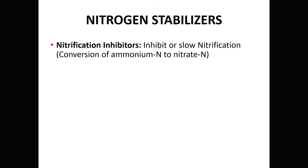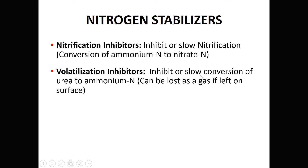When we talk about nitrogen stabilizers — also called nitrogen enhancements — there are two categories. The first is nitrification inhibitors. These products inhibit or slow the conversion of ammonium nitrogen to nitrate nitrogen. We want to slow that process because ammonium nitrogen is stable: microbes can't easily act on it and it holds to the soil. Once converted to nitrate, microbes can strip the oxygen and convert it to a gas — denitrification — or it can move with soil water, which we call leaching. Nitrification inhibitors are especially important when farmers apply nitrogen well in advance of when the plant will use it.